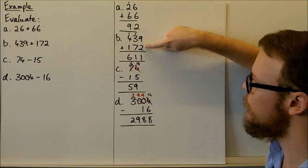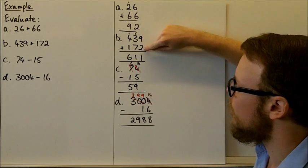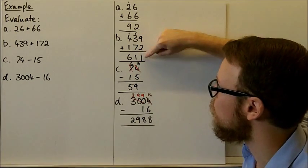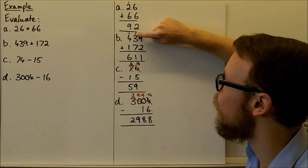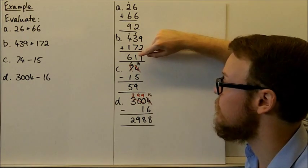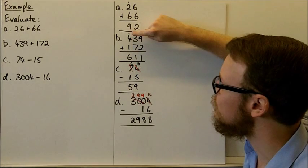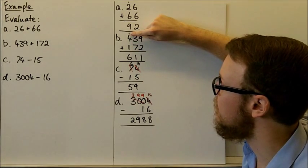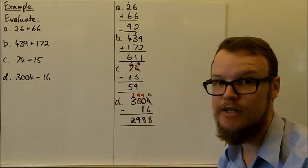For our next question here, 439 plus 172. I've arranged them vertically, so the place numbers line up. We start with the ones column, 9 plus 2 is 11. So I place the 1 in the ones column down here from the 1 of the 11, the ones in the 11, and carry the 1 and the tens over to the tens column here, and we add it to 1 plus 3 plus 7 is 11 again. So we do the same thing. We place the 1 down here from the 1 in the ones column from the 11, and get the 1 from the tens column, and place it into the next place value over and add it to the next place value. So here, adding up these numbers in this column, we get 1 plus 4 plus 1 is 6. So 439 plus 172 is 611.